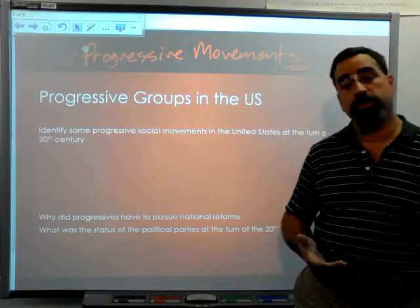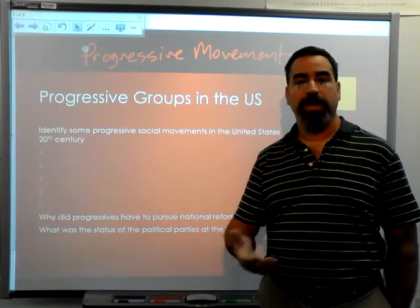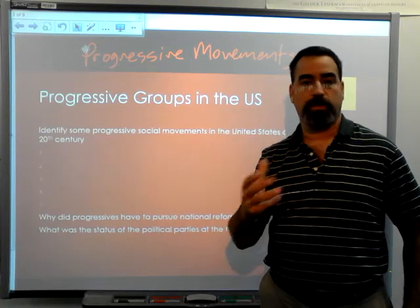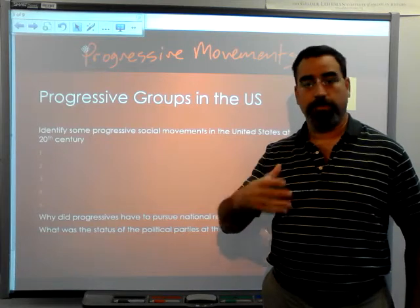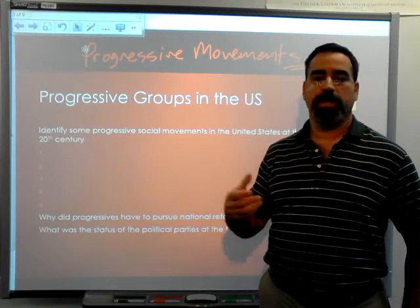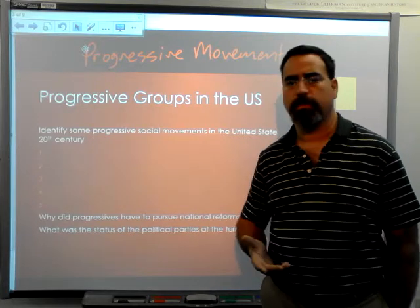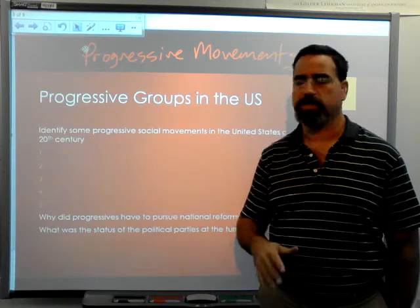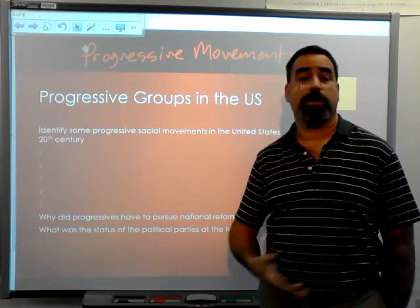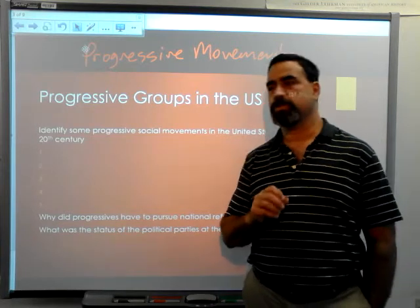Also, the Sherman Antitrust Act, which was designed to curtail trusts, was being used against unions to restrict their ability to organize. So if progressives really wanted to have an impact, they had to do it at the national level. Even something like temperance — what good was making it illegal to buy alcohol in Massachusetts if you could just go to Connecticut and buy it and come back? So they needed a national profile.